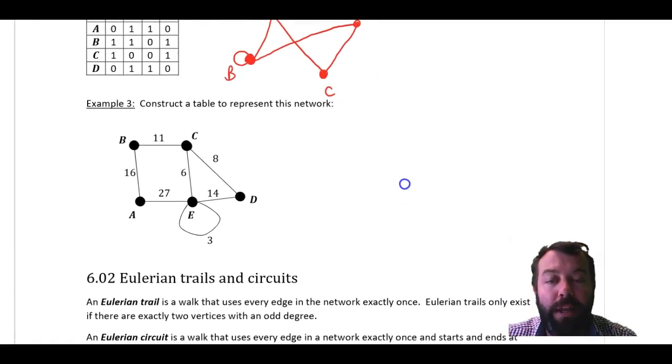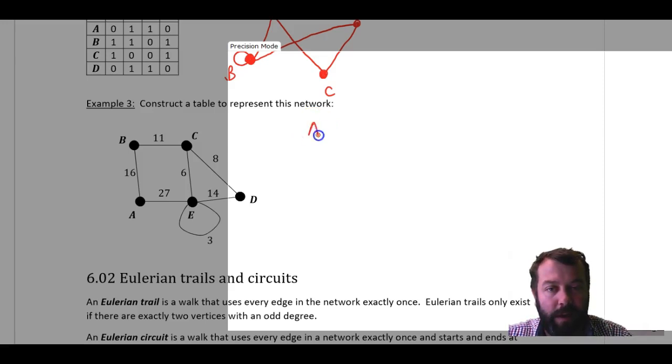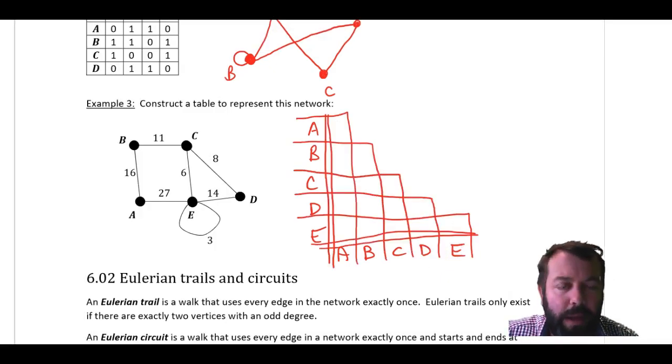Now, let's look at example three, and I want to draw a table to represent this network. So we're going to do the reverse of what we did in example two. I need a table here. I can see that I have five vertices, so I need a five by five table. In fact, I'm going to use a stepped table here just to speed things up a little bit. So I'm going to say A, B, C, D, and E here, and across the bottom. A, B, C, D, and E. And now, by the magic of video, there we have one very scruffy looking stepped table.